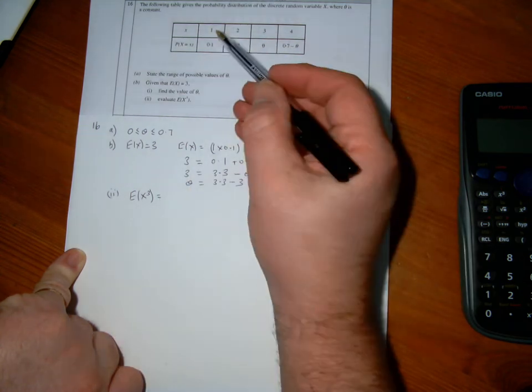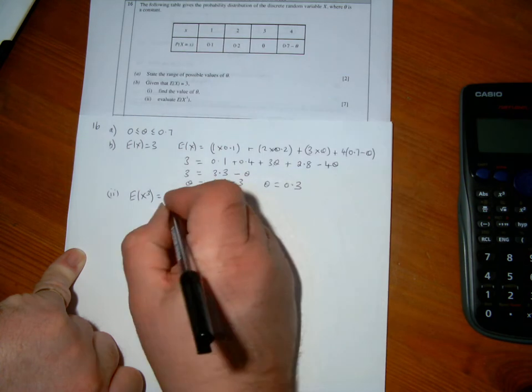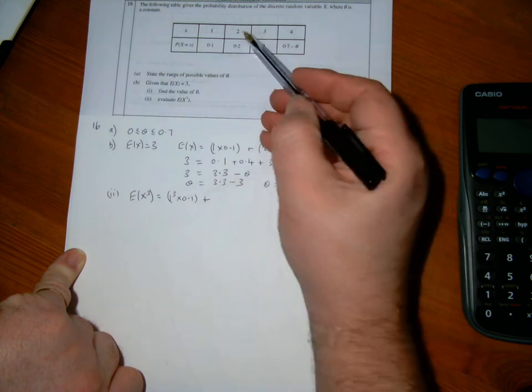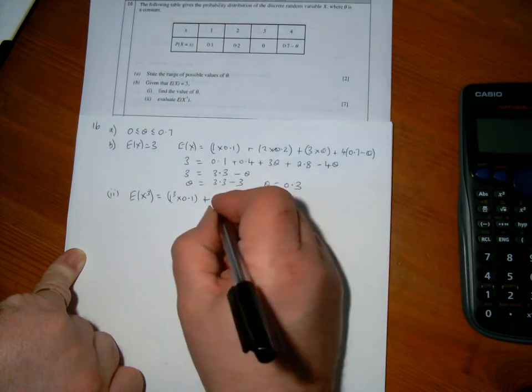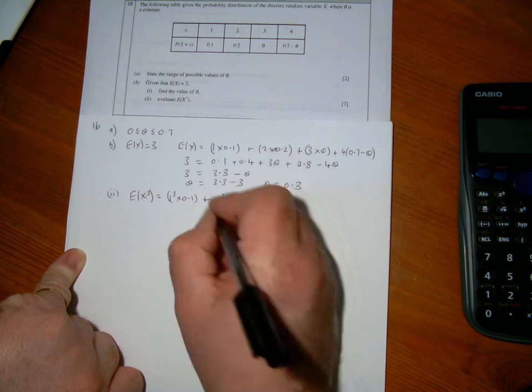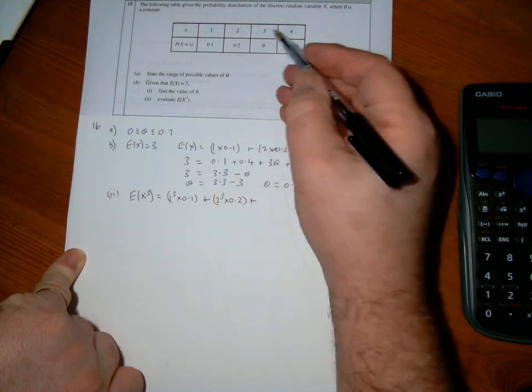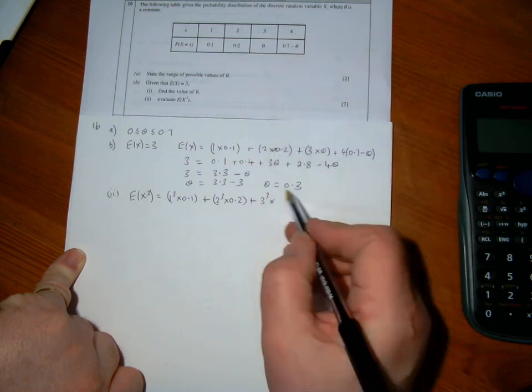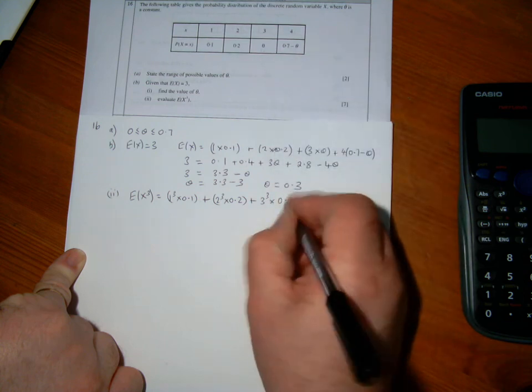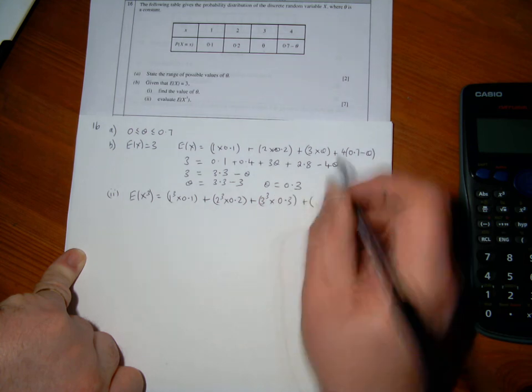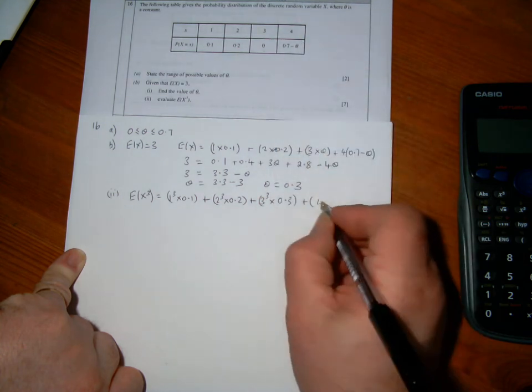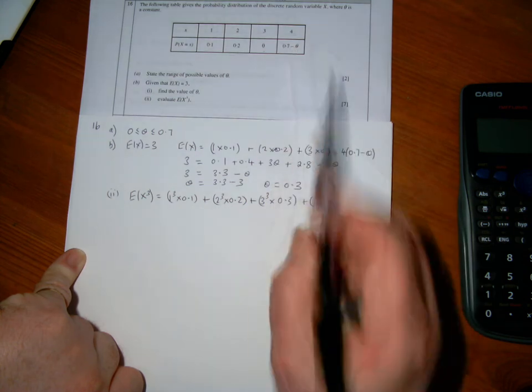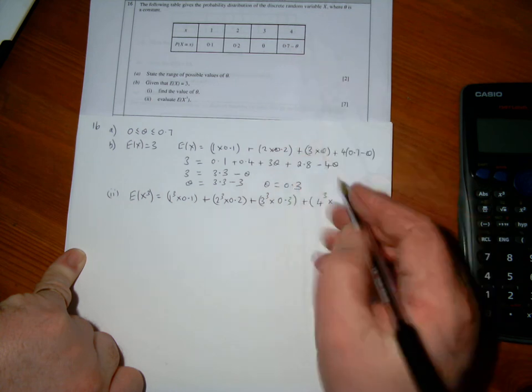So E(X³) would be 1 cubed times 0.1, add 2 cubed times 0.2, add 3 cubed times theta, and theta is 0.3, add 4 cubed times 0.7. Take away 0.3, if theta is 0.3, 0.7 take away 0.3 is 0.4.